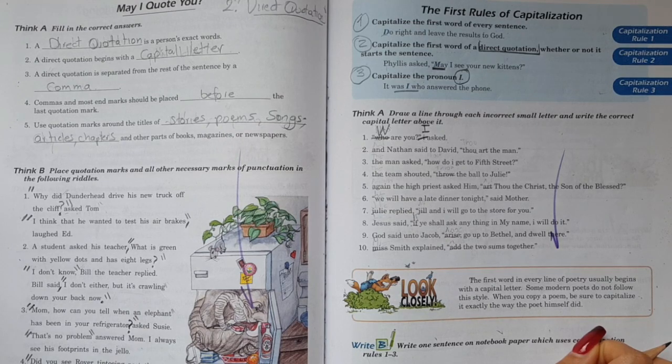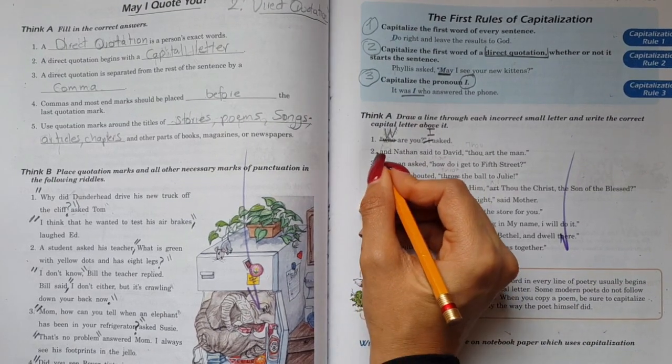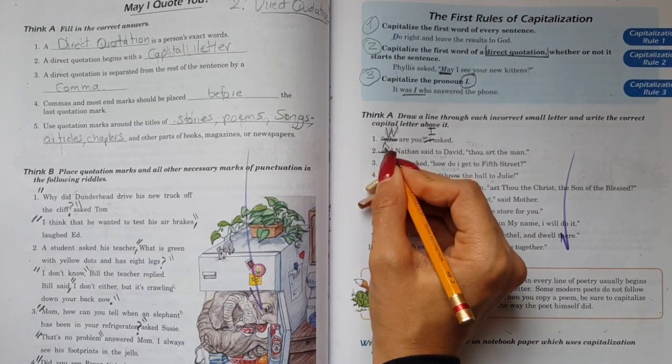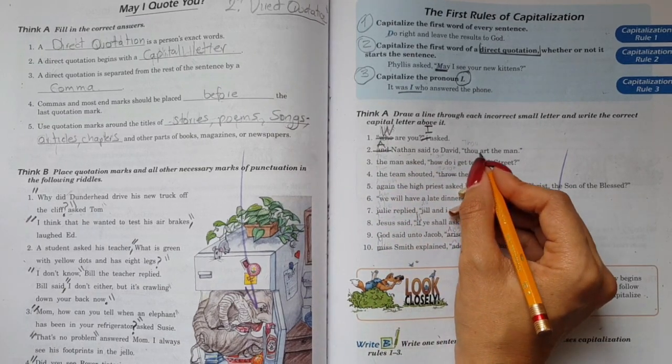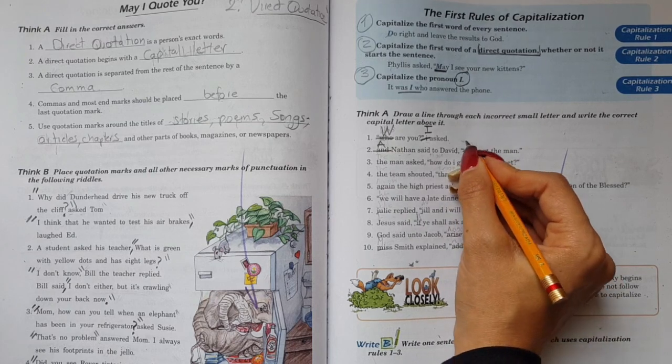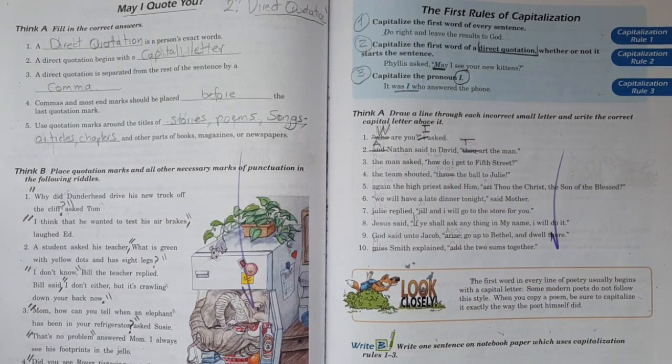Next, and Nathan said to David. So I'm going to draw a line, I'm going to cross it out and write a capital A. Nathan said to David, thou - then I cross this out and put a T.